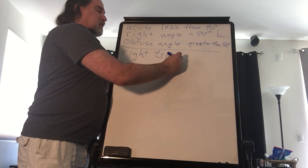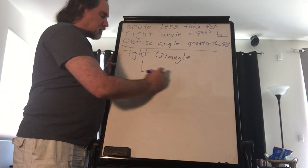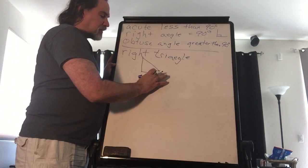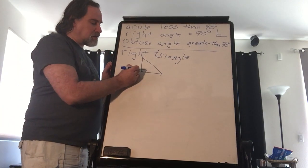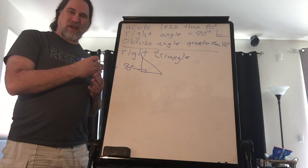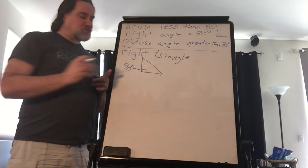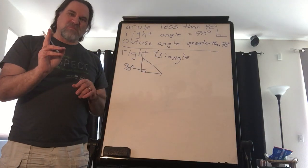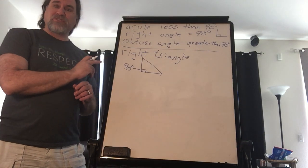The first one we're going to talk about is a right triangle. You should remember this from all the work we did with the Pythagorean theorem. A right triangle is just any triangle that has exactly one right angle, one 90 degree angle. That's what indicates that this is a right triangle. We don't worry about the other two.